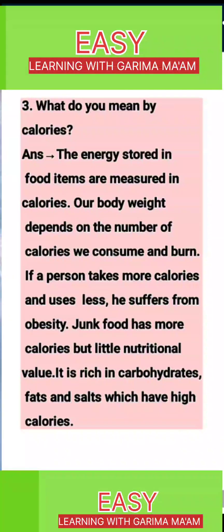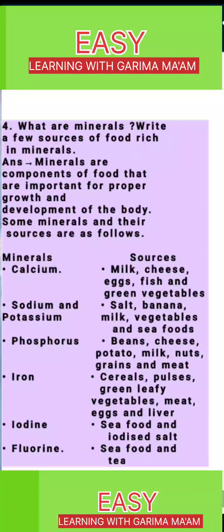4. What are minerals? Write a few sources of food rich in minerals. Minerals are components of food that are important for proper growth and development of the body. Some minerals and their sources: Calcium — milk, cheese, eggs, fish and green vegetables. Sodium and potassium — salt, banana, milk, vegetables and seafoods. Phosphorus — beans, cheese, potato, milk, nuts, grains and meat. Iron — cereals, pulses, green leafy vegetables, meat, eggs and liver. Iodine — seafood and iodized salt. Fluorine — seafood and tea.